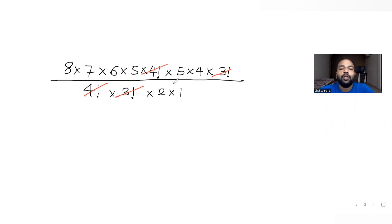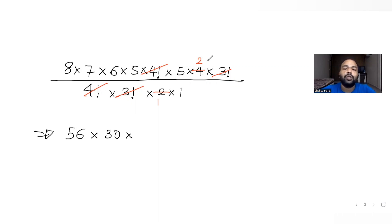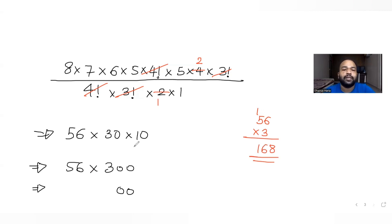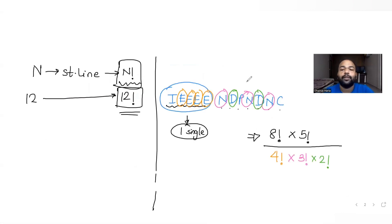2 factorial is 2 × 1 = 2. We cancel the 2 with the 4, leaving 2. So the numerator becomes 8 × 7 × 6 × 5 × 2 = 56 × 300 = 16,800. All denominator terms cancel to 1, giving us 16,800 possible arrangements.